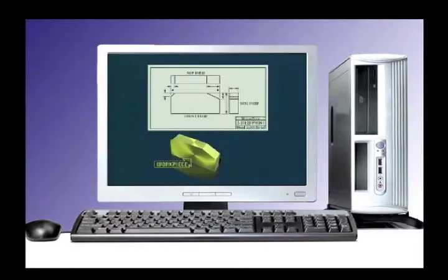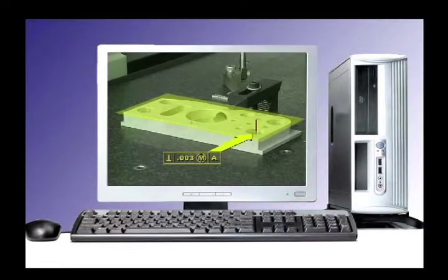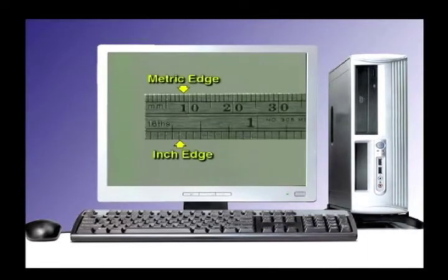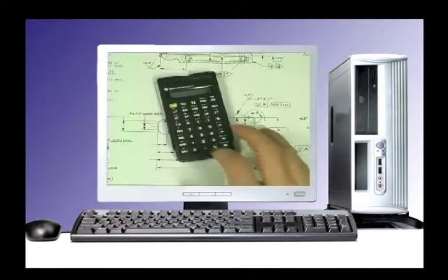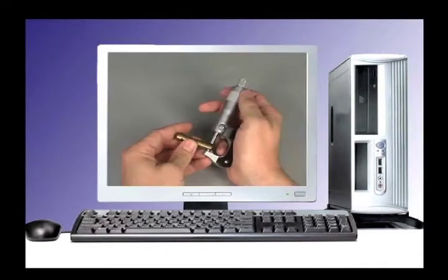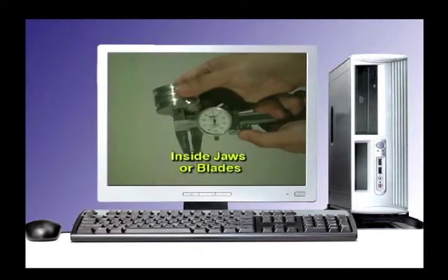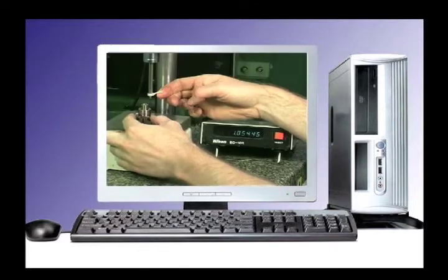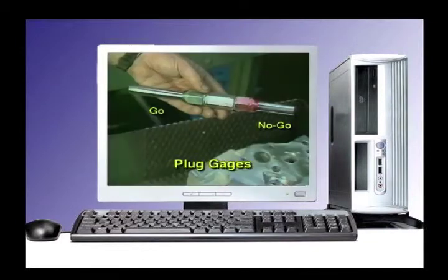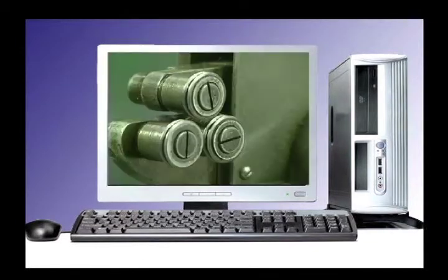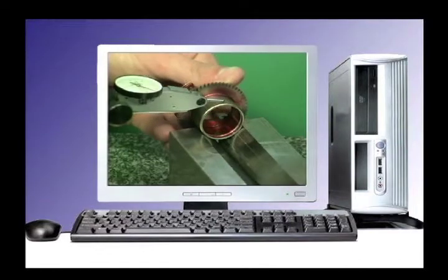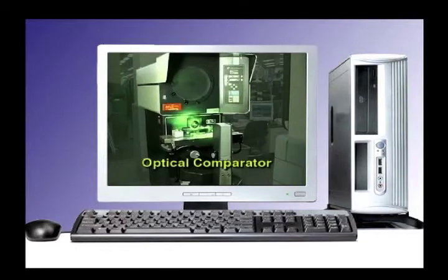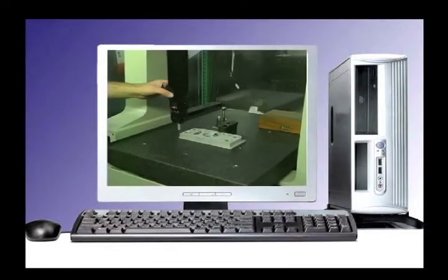Some of the topics covered are basic print reading, geometric dimensioning and tolerancing, the inch and metric systems of measurement, shop math, micrometers, calipers, rulers, height gauges, roughness gauges, plug gauges, thread dimensions and measurement gauges, open set-up devices, optical comparators, and coordinate measuring machines.